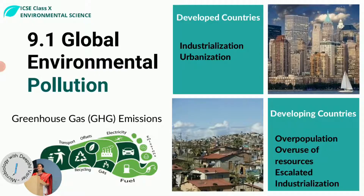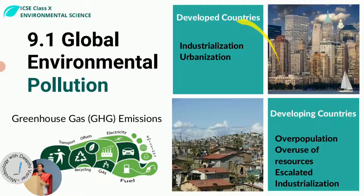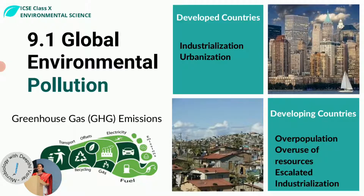When developing countries want to have accelerated development, they suddenly escalate their industrialization to improve their economy, which again leads to a host of environmental problems. So both developing and developed countries do add to greenhouse gas emissions and leave a carbon footprint. But what happens is they keep blaming each other for the majority of environmental pollution.